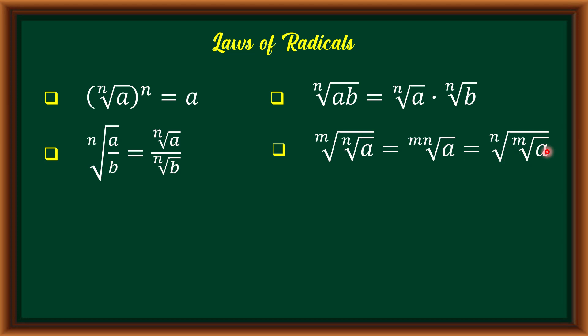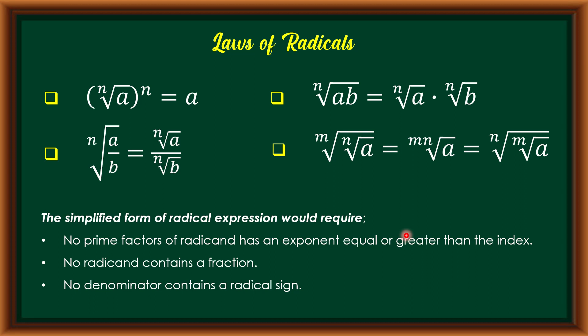Later I'll give you examples on how to use these laws of radicals to simplify radical expressions. But for now, please remember that the simplified form of a radical expression requires: first, no prime factors of a radical has an exponent equal to or greater than the index; second, no radical contains a fraction; and third, no denominator contains a radical sign.